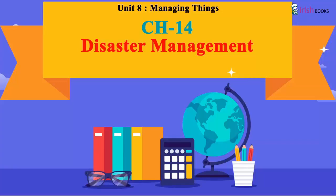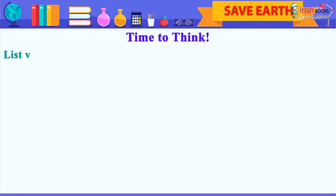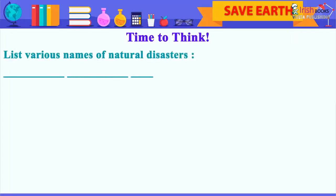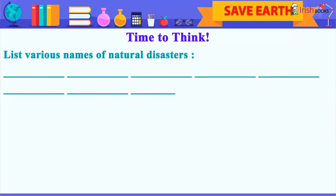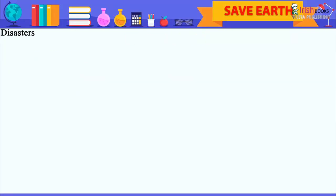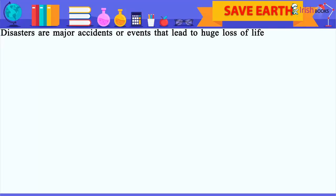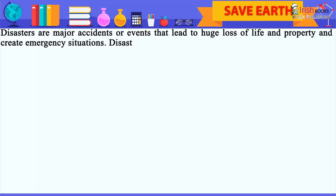Chapter 14: Disaster Management. Time to Think — list various names of natural disasters. Disasters are major accidents or events that lead to huge loss of life and property and create emergency situations.